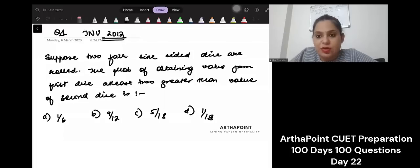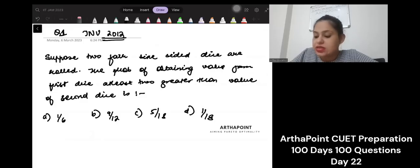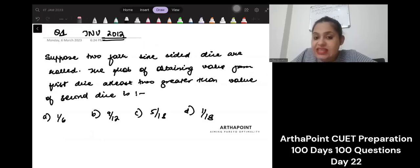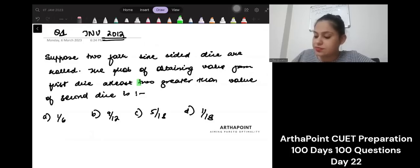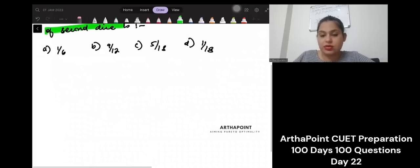Hello, good evening everyone. Today I am picking one question from your GRE 2012 paper. This is question number one. It says: suppose two fair six-sided dice are rolled, the probability of obtaining the first die at least two greater than the value on the second die.